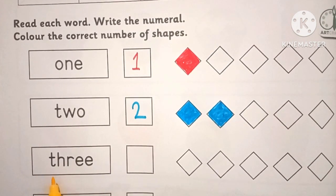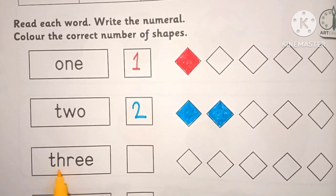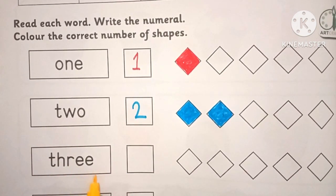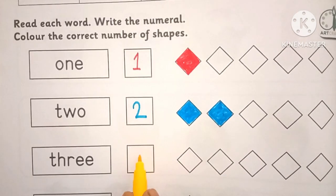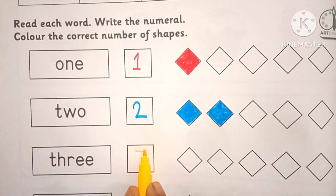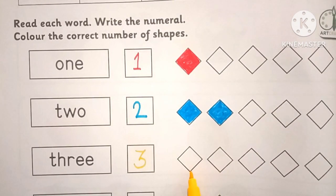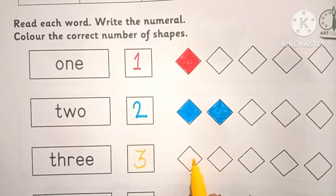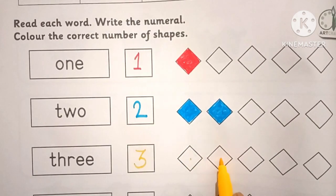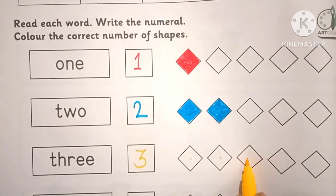Next is T-H-R-E-E, 3. Then color 3 shapes: 1, 2, 3.